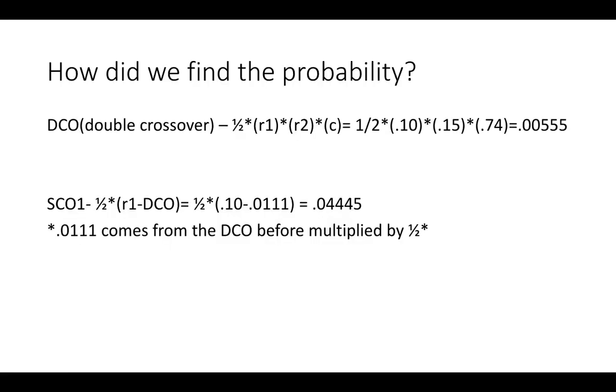Let's look at our double crossover or our DCO. We use a formula. Our formula is 1/2 times r1 times r2 times c. Where do these numbers come from?